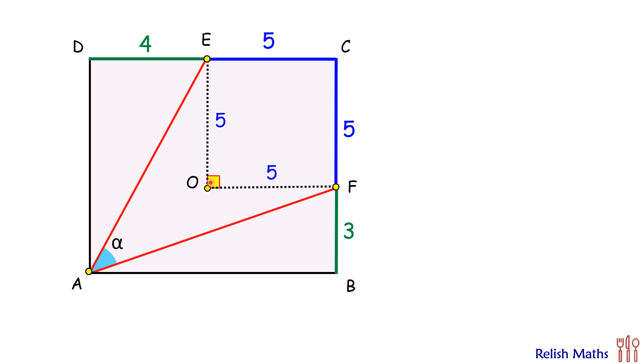Now this EO will extend to meet AB at point G. Now length OG, that will be same as FB or 3 cm. How about AG? AG will be same as DE or 4 cm.